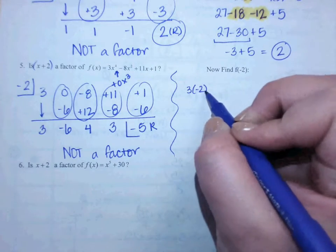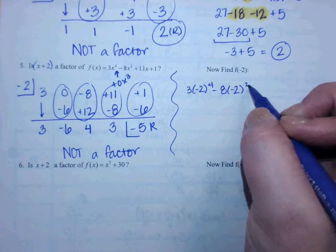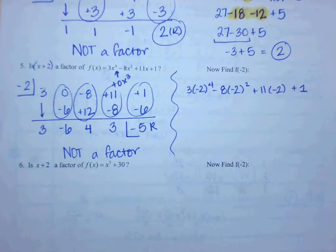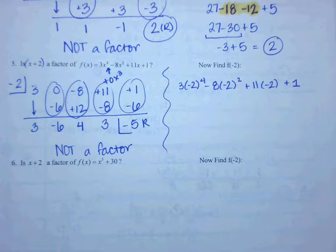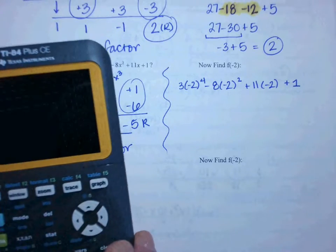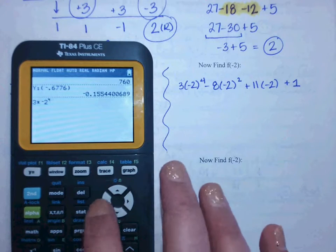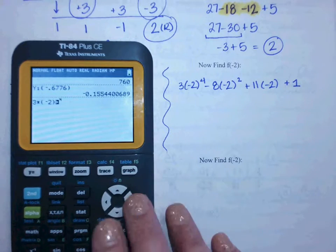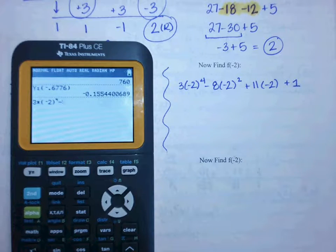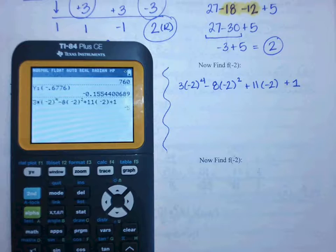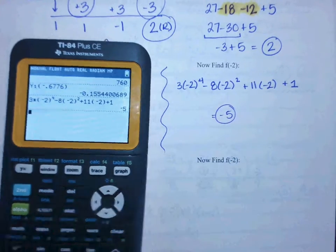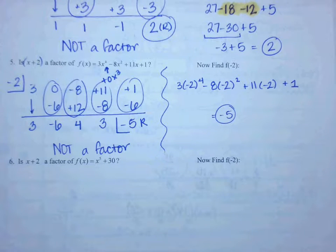So it'll be 3 times negative 2 to the 4th minus 8 times negative 2 squared plus 11 times negative 2 plus 1. Now, if you wanted to write in the 0, fine, you can. But remember that if I put a 0 in front of it, it's going to cross out anyway. So we'll shortcut this one since it's a little bit longer. 3 times negative 2. Can I type it in like this? Up to the 4th like that? That's going to be wrong. You have to use parentheses if your base is negative. So I'm going to come over here, put a parentheses in on both sides. So 3 times negative 2 to the 4th minus 8 times negative 2 squared plus 11 times negative 2 and then plus 1. My answer comes out to be negative 5. What do you notice about your remainder and your answer? They're the same.